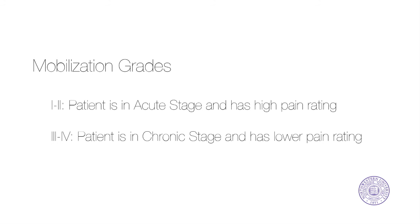Depending on the patient's pain level and acuity of the injury, grades 1, 2, 3, and 4 can be used to increase range of motion. If the patient is in the acute stage and has pain, grades 1 and 2 may be indicated; the treatment may be continued if the patient has diminished symptoms. If the patient is in the chronic stage with no pain, grades 3 and 4 may be used.